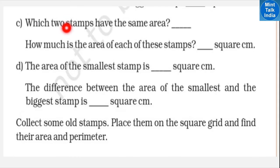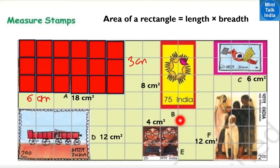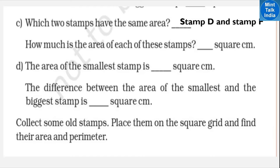Which two stamps have the same area? Stamps D and F both have the same area. Each of these stamps has an area of 12 square centimeters.